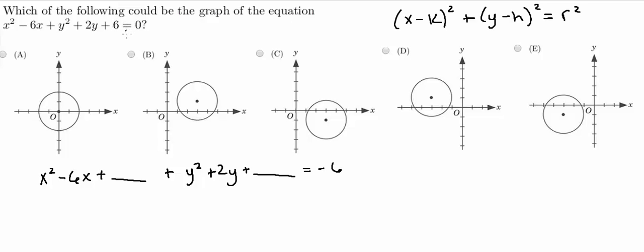So what I did there, I kind of skipped a step, but I just brought this 6 over to the right hand side. So I subtracted 6 from this side and then I subtracted 6 from this side.